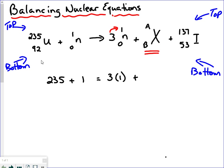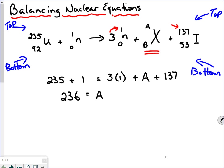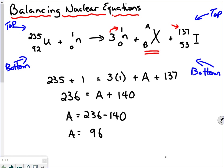Element X has an atomic mass of A — we don't know what A is, we're going to solve for that. And then we've got iodine, which has an atomic mass of 137. So adding the top numbers: on the reactant side I have 236, and on the product side I have A plus 3 times 1 plus 137. That's A plus 140. So relatively easy to solve for A — subtract 140 from both sides and we get A equals 236 minus 140, which comes out to 96. So the atomic mass of element X is 96.